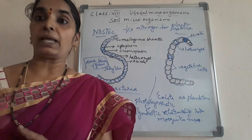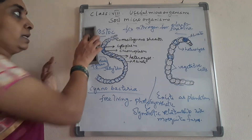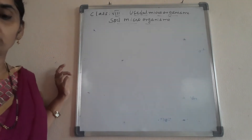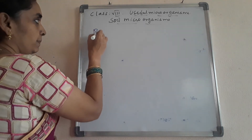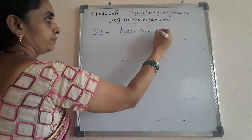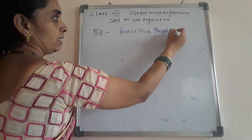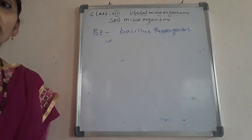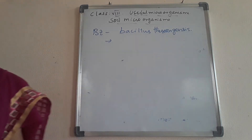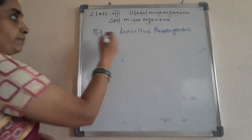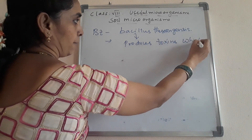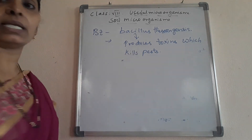Next, we move to another bacterium called BT bacterium — Bacillus thuringiensis. This bacterium produces a toxin which kills pests. So Bacillus thuringiensis produces toxins that kill the pests affecting plants.